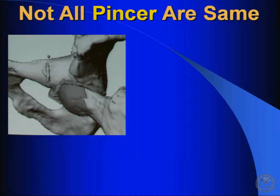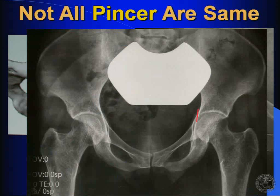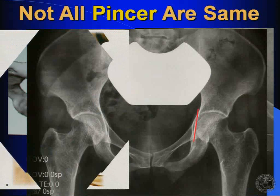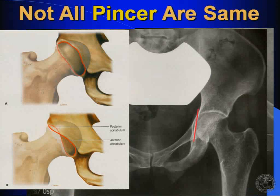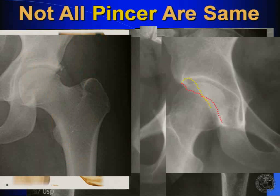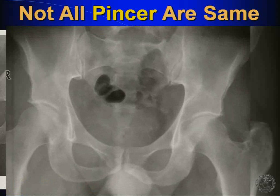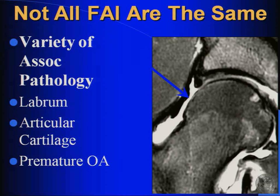With pincer lesions, the same thing applies. It has been described by the Swiss as over-coverage of the acetabulum. You can have it as a result of coxa profunda, where the floor of the acetabulum hits the ilioischial line or goes beyond it. You can have protrusio, where the femoral head gets to or goes beyond the ilioischial line. You can have relative retroversion of the superior aspect of the acetabulum or actual retroversion itself, ossification of the labrum — either partial or complete — and you can also have cranial retroversion with some mild dysplasia. So there's a variety of different types of pincer impingement.